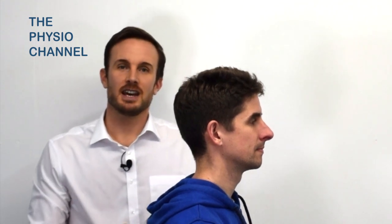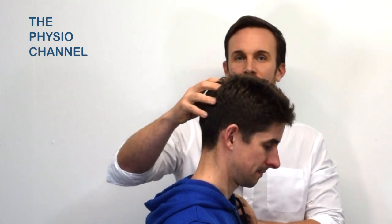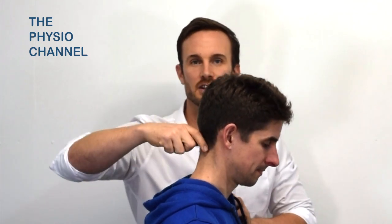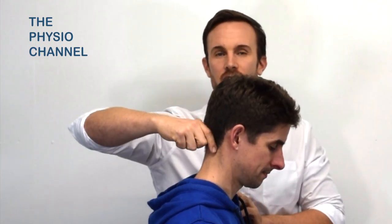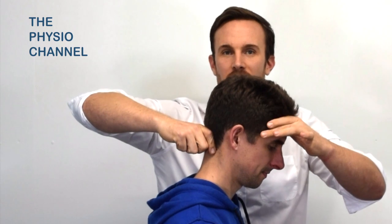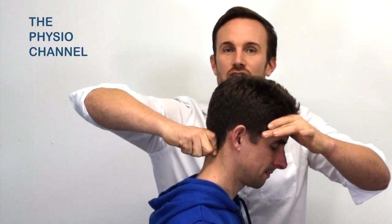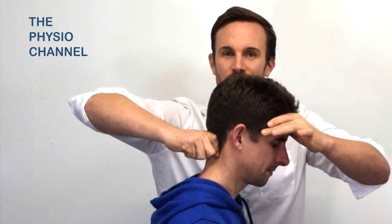To perform this test, sit the patient and place the head into a slight flexion position. Apply pressure over the C2 vertebrae and then translate the head back over this fixed point by pushing through the forehead.